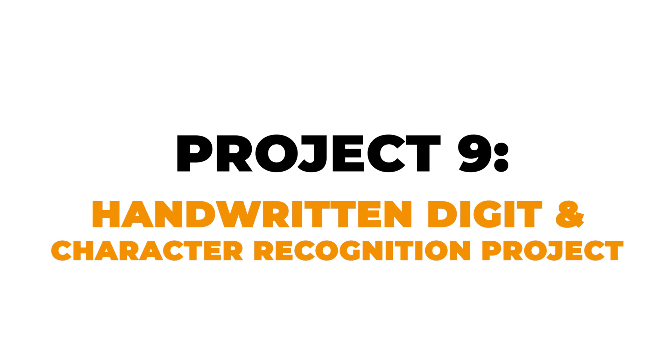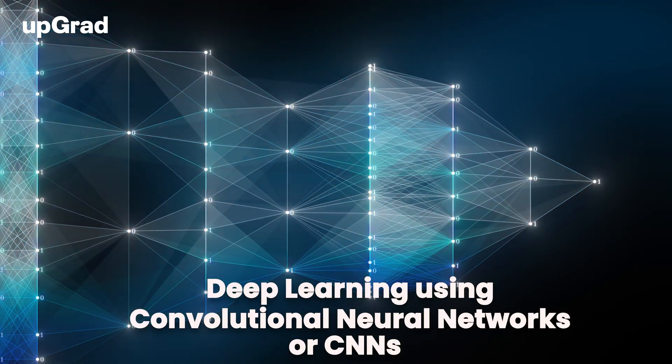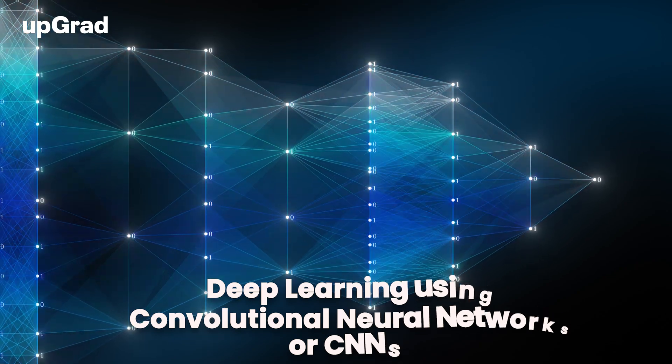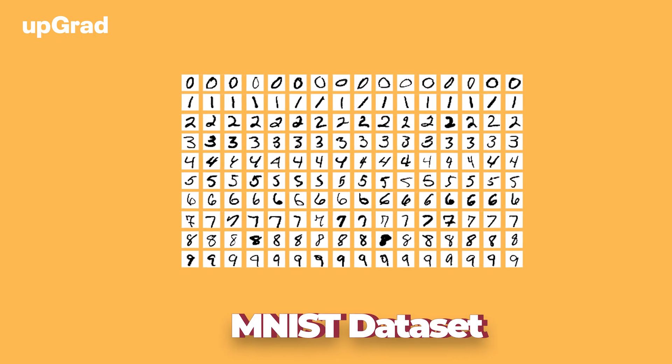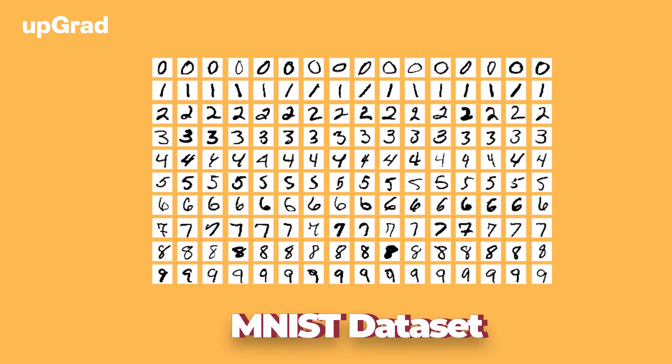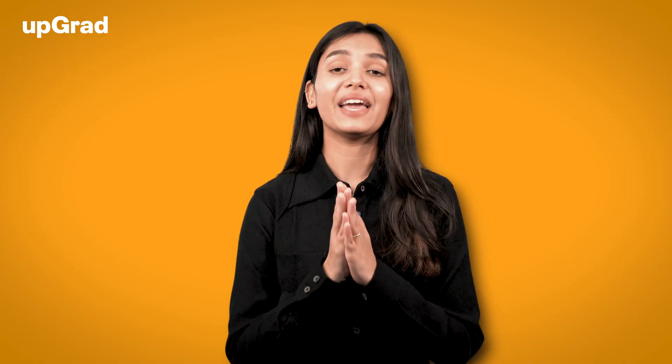Project 9: Handwritten Digit and Character Recognition. This is a hands-on way to learn deep learning using convolutional neural networks (CNNs). You will work with the MNIST dataset, a collection of handwritten digits, and build a model that can predict digits drawn on a canvas through a creative graphical interface. You will also get to work with Keras and Tkinter libraries, gaining valuable experience in building and deploying machine learning models.